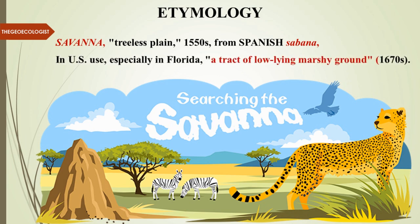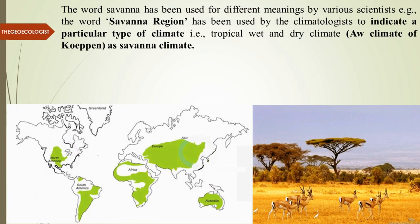In the US, especially in Florida, it was used as a tract of low-lying marshy ground, referred to in the 1670s and 1700s. So the word Savannah has been used for different meanings by various scientists. Some use it to refer to a particular location on the Earth's surface — the Savannah region. Climatologists have used it to indicate a particular type of climate.